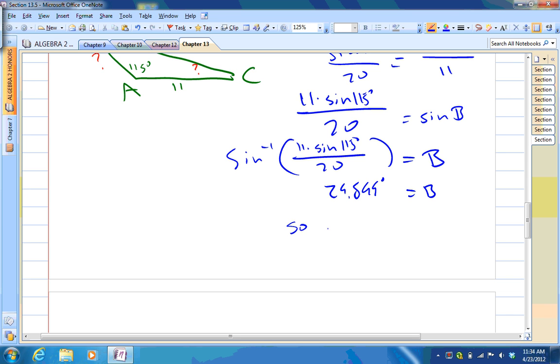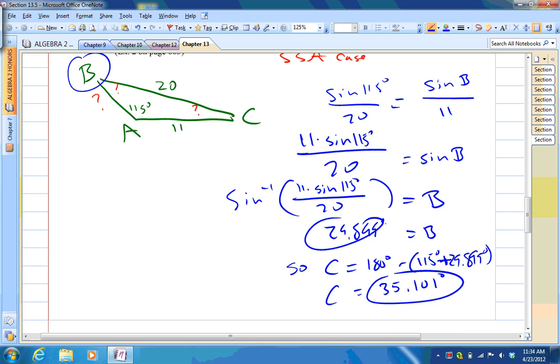So, angle C will be 180 degrees minus 115 degrees plus 29.899 degrees. So, 180 minus 115 plus that. So, we should get 35.101 degrees.